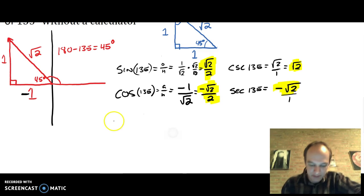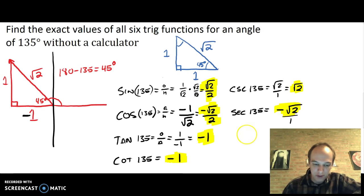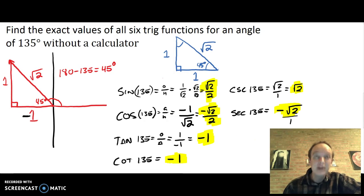Tangent time. Tangent of 135° is going to be opposite over adjacent. That's going to be one over negative one or just negative one. Cotangent of 135° is going to be the reciprocal of negative one, which is just negative one. Those are the six final answers. Here's the whole problem all in one. Next problem.